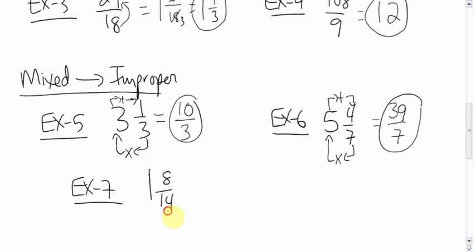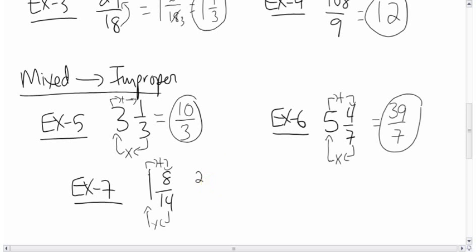1 and 8 fourteenths, again, same thing, bottom times the big number, add it to the top number. 1 times 14 is 14, 14 plus 8 is 26. It's 24. Sorry.